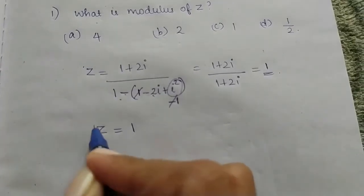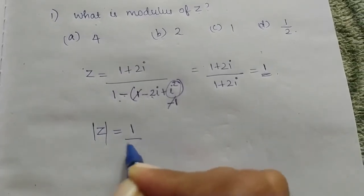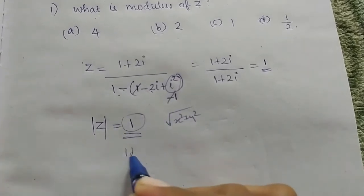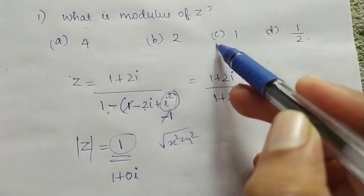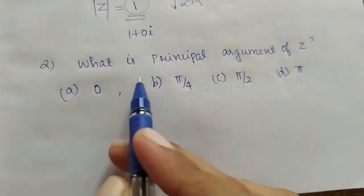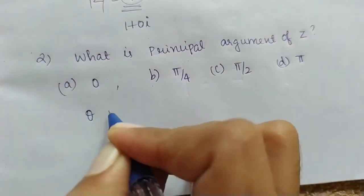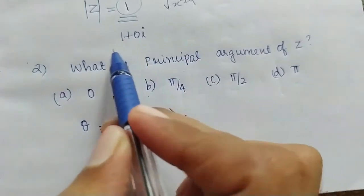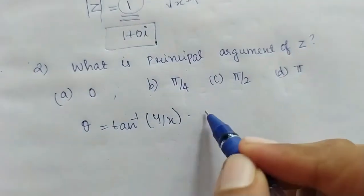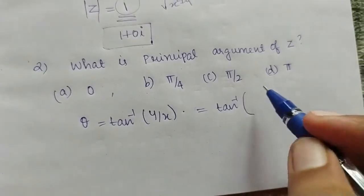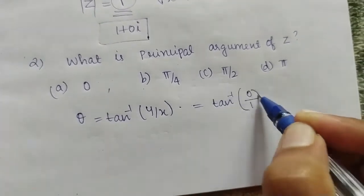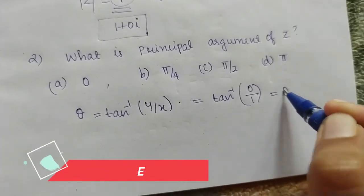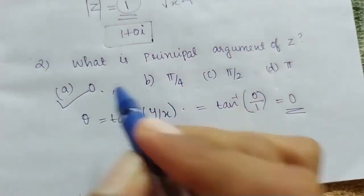Now we find the modulus of z. Modulus is root of x squared plus y squared. The complex number is 1 plus 0i, so the modulus is 1 — option C is correct. For the principal argument, theta equals tan inverse of y by x. With y equals 0 and x equals 1, tan inverse of 0 by 1 equals 0. So option A is the correct answer.